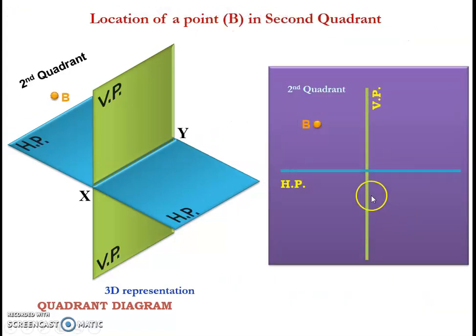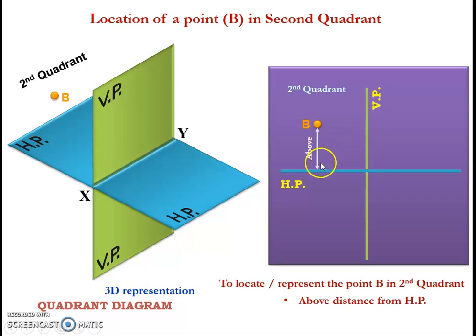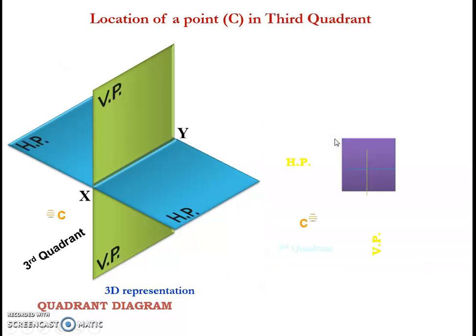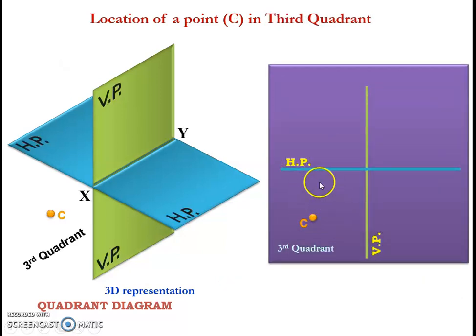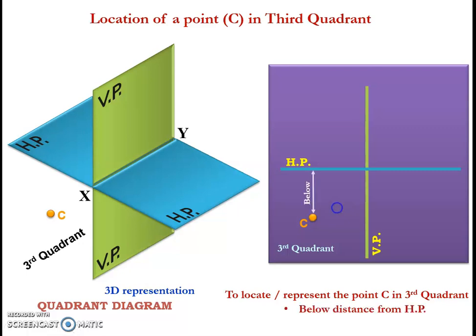Now we consider another point B which is in the second quadrant. To locate or to represent point B which is in the second quadrant, we need the above distance from the horizontal plane and the behind distance from the vertical plane. Now we consider another point C which is in the third quadrant. We need the below distance from the horizontal plane and the behind distance from the vertical plane.